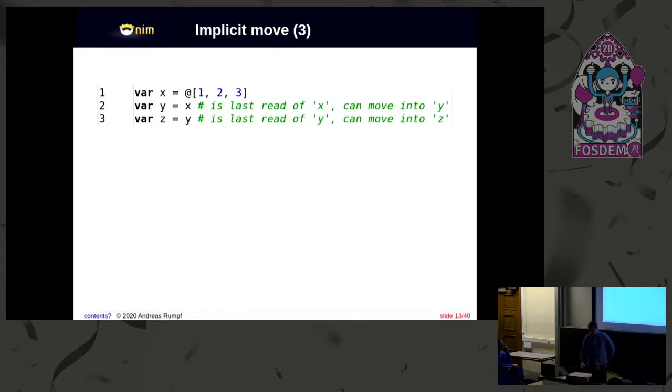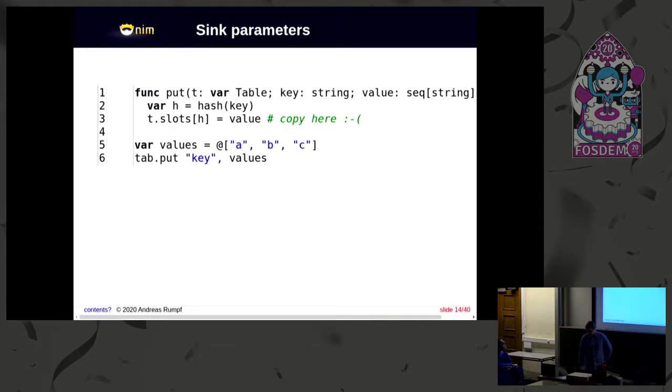And here's another example. So I have a list of three integers inside. And if I say Y is X, then since X isn't used anymore, we can move. And likewise for the Z equals Y. And so this works for local variables.